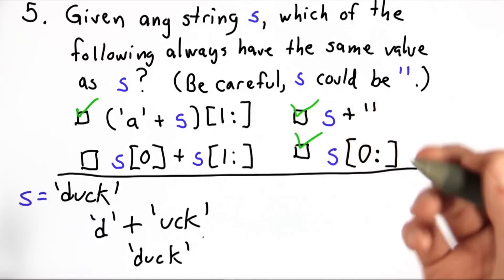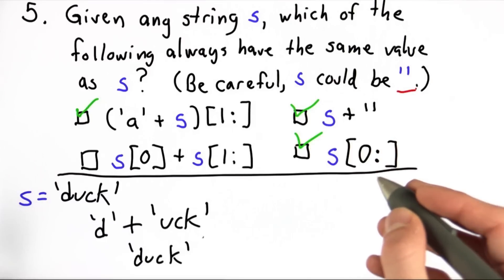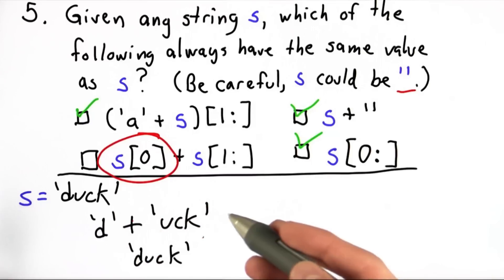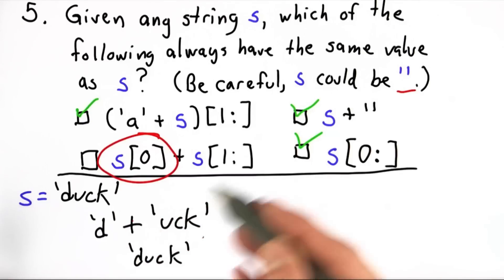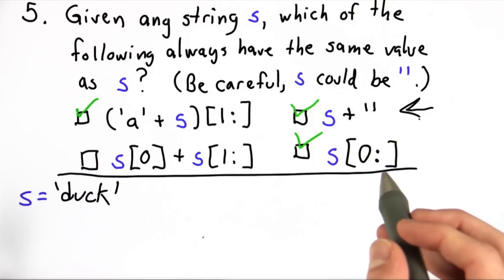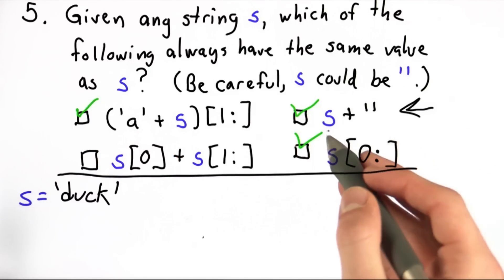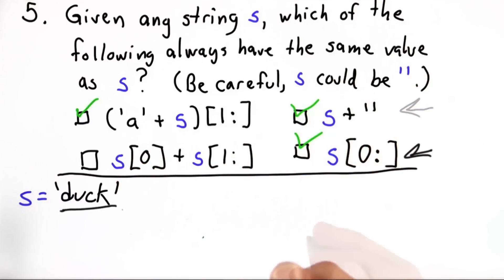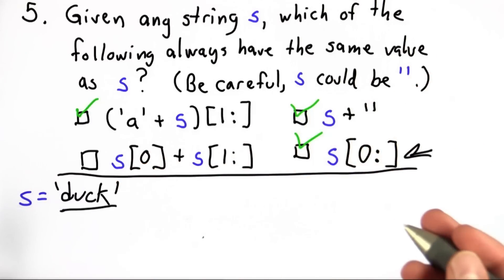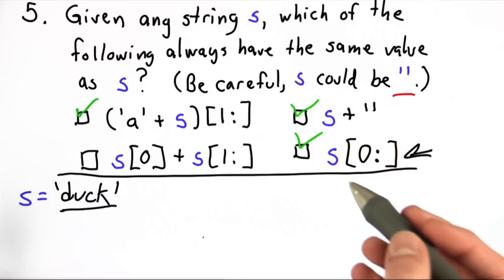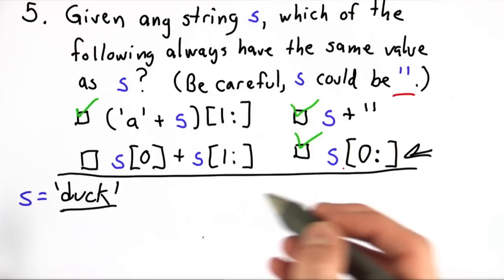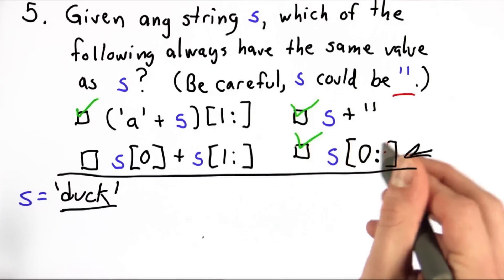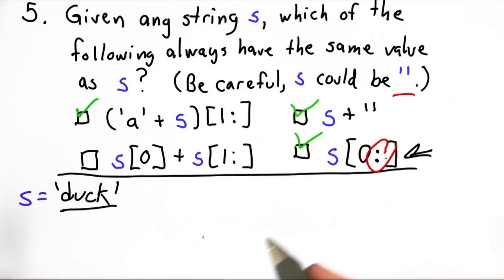So this seems like it works, but we have to remember that s can be the empty string. If we try taking the character at position 0, we would get an error because there is no character at position 0 — there are no characters in s. We have to remember that for the subsequence operator, this does not cause an error.